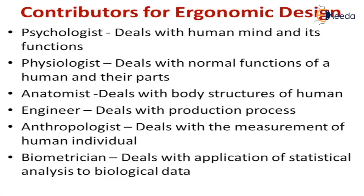The anthropologist deals with the measurement of the human individual. For every human, there is something called the workspace — the maximum extent that the hands and legs can move, which is the 360-degree workspace. He deals with what distance has to be maintained between a worker and a machine so that he can work comfortably. For example, what should be the height of the chair while sitting before a computer, so that the screen is parallel to your eyesight.